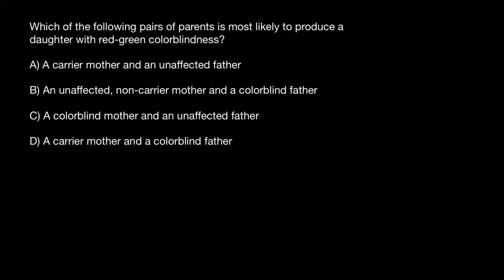Let's analyze suggestion A: a carrier mother and an unaffected father. I'll use red color to designate the defective X chromosome — the X chromosome is normal, but the gene that specifies this disorder is mutated. I use red and green color to show the normal X chromosome. The father is unaffected, so his genotype is a normal X and normal Y chromosome.